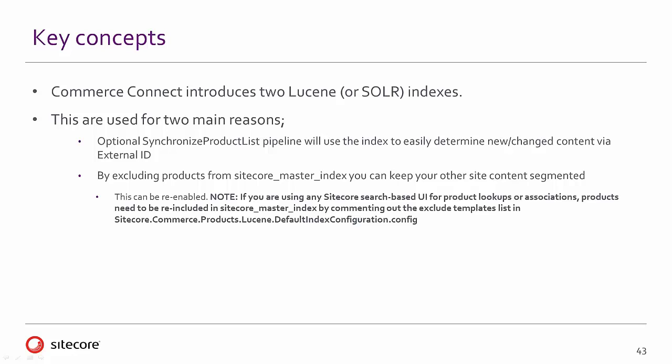Commerce Connect introduces two new indexes — either Lucene indexes or Solr indexes — used for two main reasons. The first is a pipeline processor called Synchronized Product List, which uses the index to easily determine what is new and changed via the external ID. The indexing value differs from the existing Sitecore Master Index or Sitecore Web Index by the fact that additional fields are added for the pipeline processor to easily look up those values.